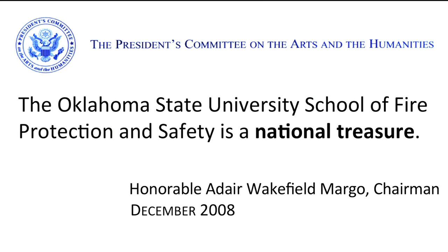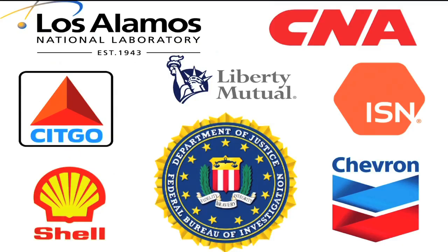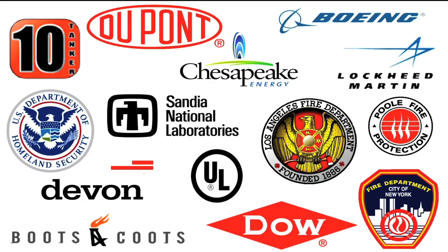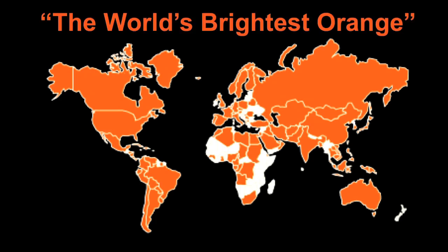In addition to preventing catastrophes and protecting human life, the School of Fire Protection and Safety was recognized as a national treasure by the President's Committee on the Arts and Humanities for protecting artistic and cultural treasures throughout the world. This is a small sampling of where our graduates work. This map represents the 114 countries where School of Fire Protection and Safety alumni strive to keep the world safe. And this is how the School of Fire Protection and Safety is transforming America's brightest orange into the world's brightest orange. Thank you.